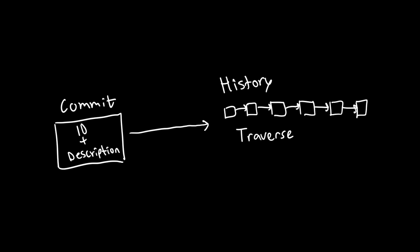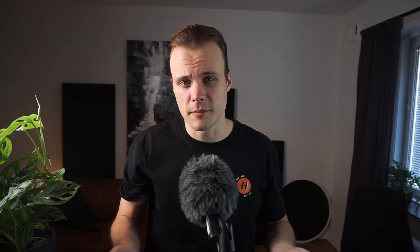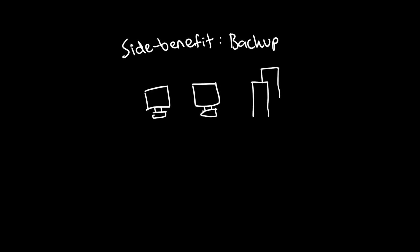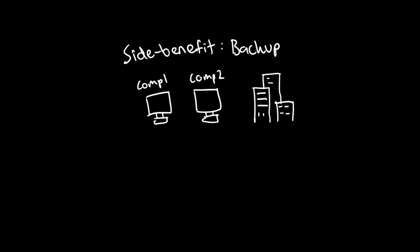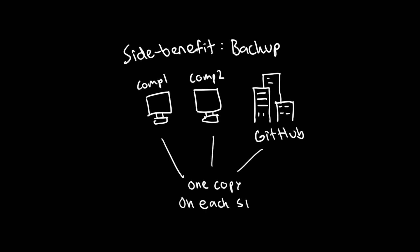That history also serves as documentation over the progress of your project. Of course, the quality of this documentation depends on how well you write your commit messages, which I will talk about in a moment. Also, as a side benefit of the distributed nature of Git, it also kind of helps you make sure you back up your project. Because as soon as you work on your project from multiple computers, or push your project to a hosting platform, you essentially back up the entire history of your project.